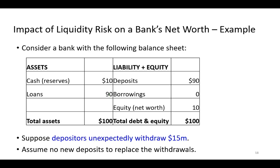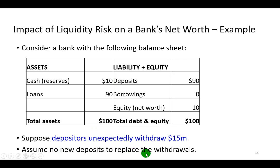Here's the problem that might arise. Suppose that suddenly depositors decide to unexpectedly withdraw 15 million bucks. That's a problem because the bank has only 10 million in reserves. So with no new deposits to replace the withdrawals made, the bank certainly has a situation that it has to attend to pretty quickly.